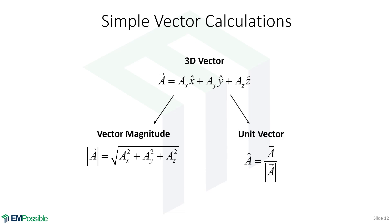We may also want a unit vector in the direction of A — probably because we want just the direction and don't want its magnitude to affect a calculation. To calculate the unit vector A-hat, we take the actual vector A and divide it by its magnitude. Now we have a unit vector in the direction of A.